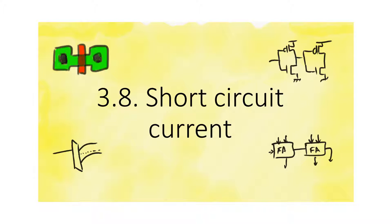One major limitation of CMOS is the fact that it allows a short circuit current to pass between supply and ground. This seems counter to the very nature of CMOS, but let me explain why this current flows and why it is very dangerous.